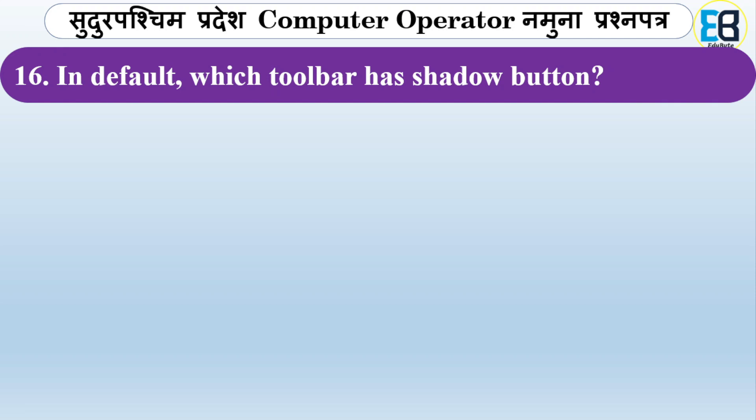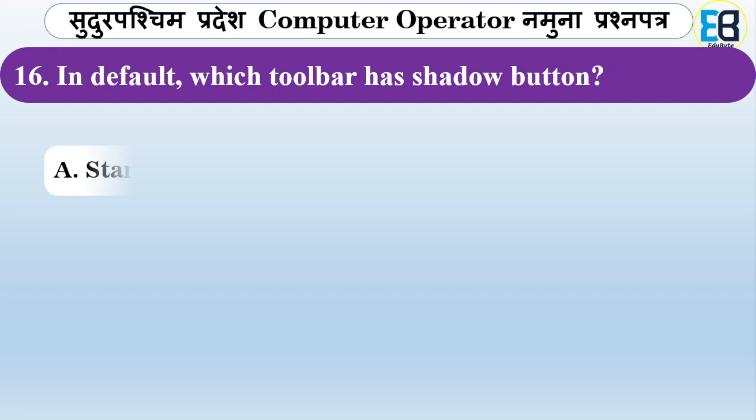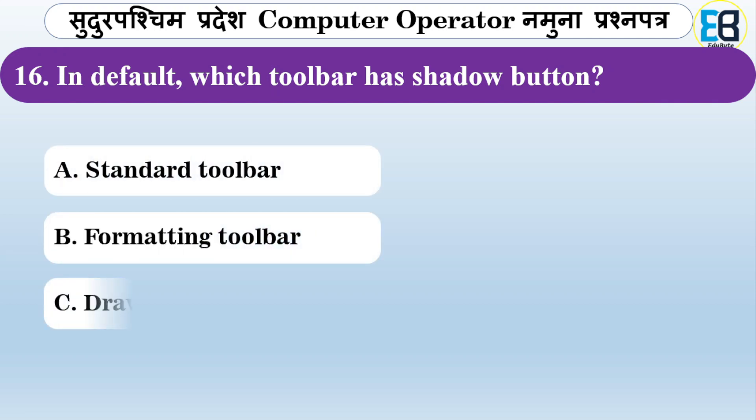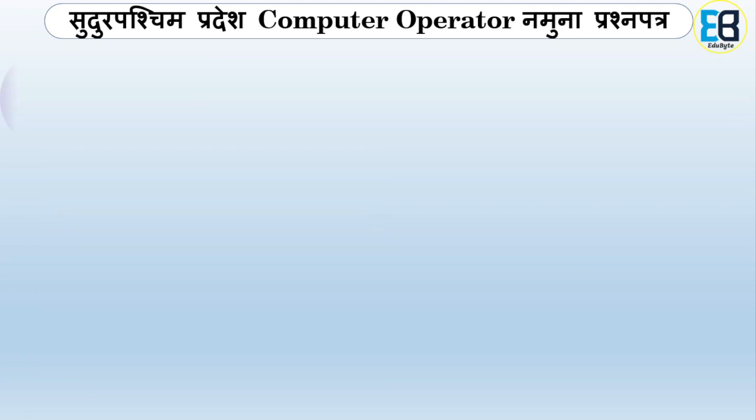By default, which toolbar has a shadow button? Options are Standard toolbar, Formatting toolbar, Drawing toolbar, Picture toolbar, or Control bar. The correct answer is Drawing toolbar — it has the shadow button by default.